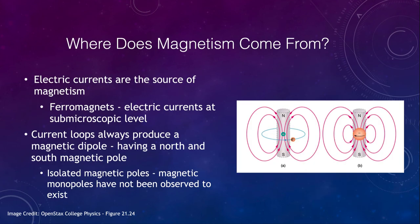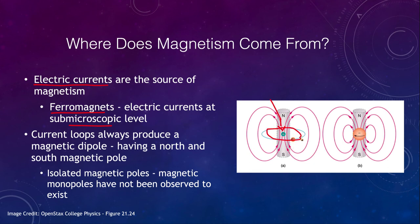Where does magnetism come from? The source of magnetism is electric currents. For ferromagnets, these are electric currents at the sub-microscopic level — we are looking at individual atoms. In an electromagnet it was a current wrapped around a coil causing the effect, but in a ferromagnet we still have electric currents causing the magnetism. We can think of an individual atom with a proton at the center and an electron moving around it, which induces a magnetic field — the moving charge induces a magnetic field.